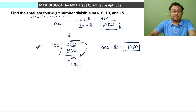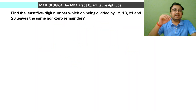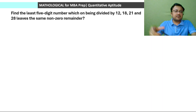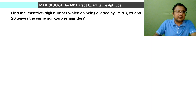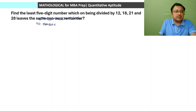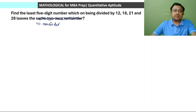Next example: find the least 5-digit number which, on being divided by 12, 18, 21 and 28, leaves the same non-zero remainder. For now, forget about the non-zero remainder condition. First, we will solve for no remainder — completely divisible — then we will handle the same non-zero remainder.